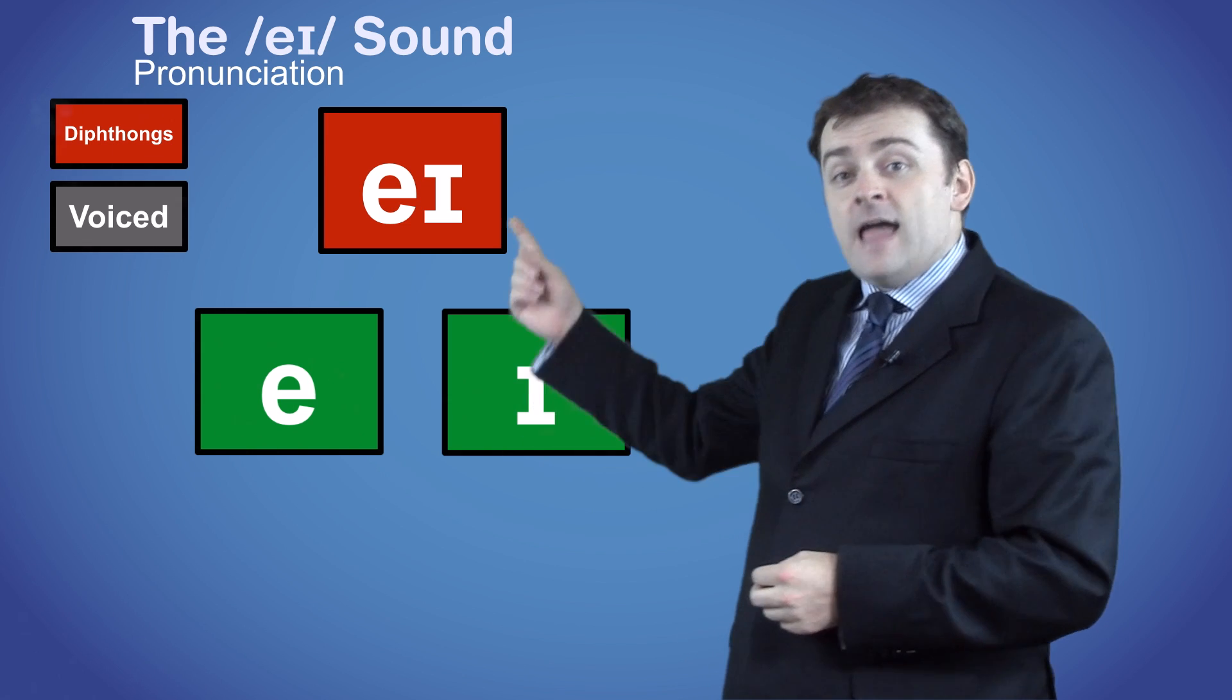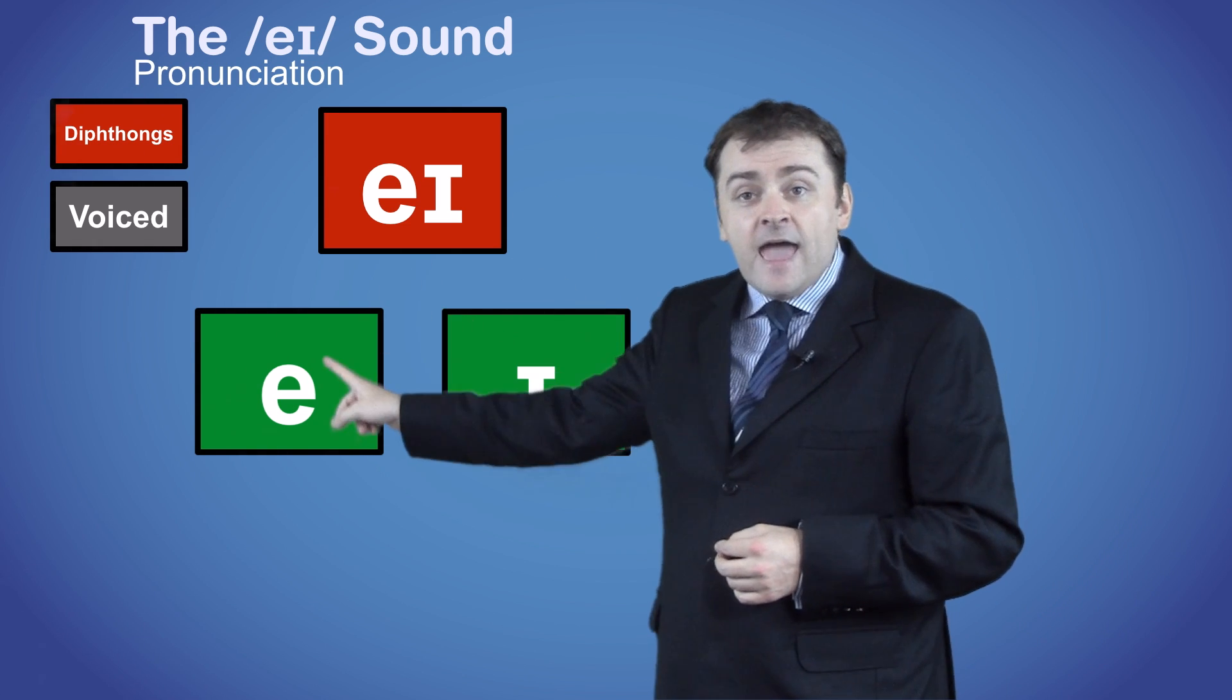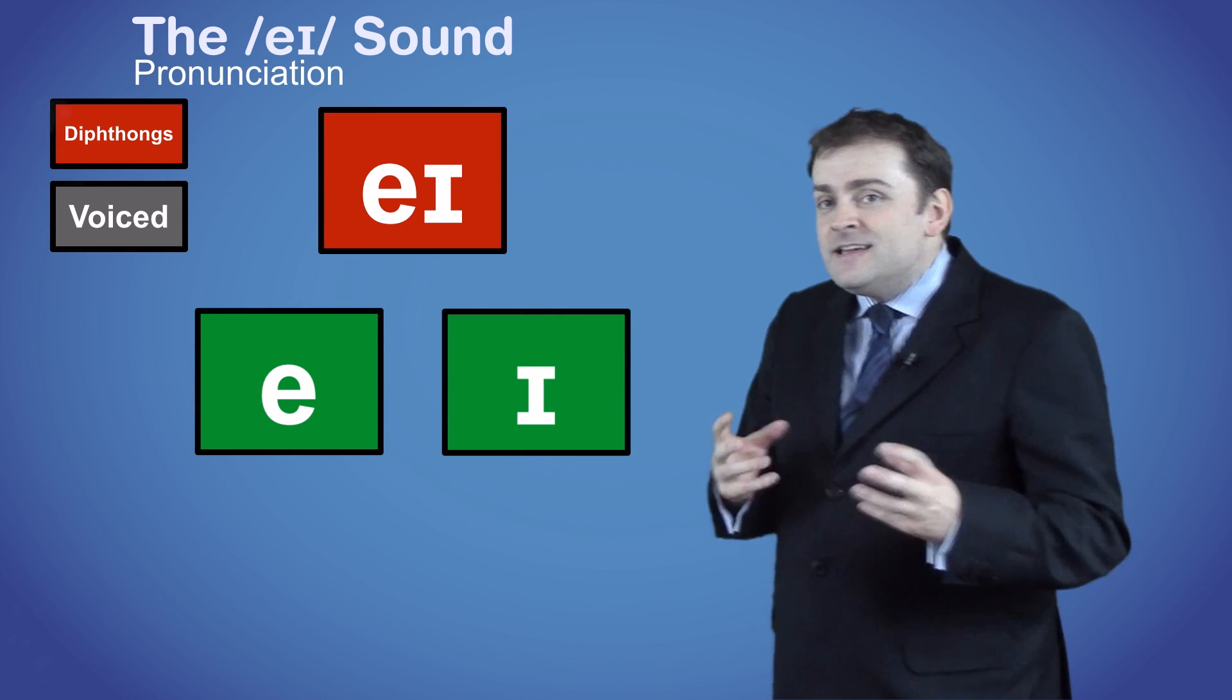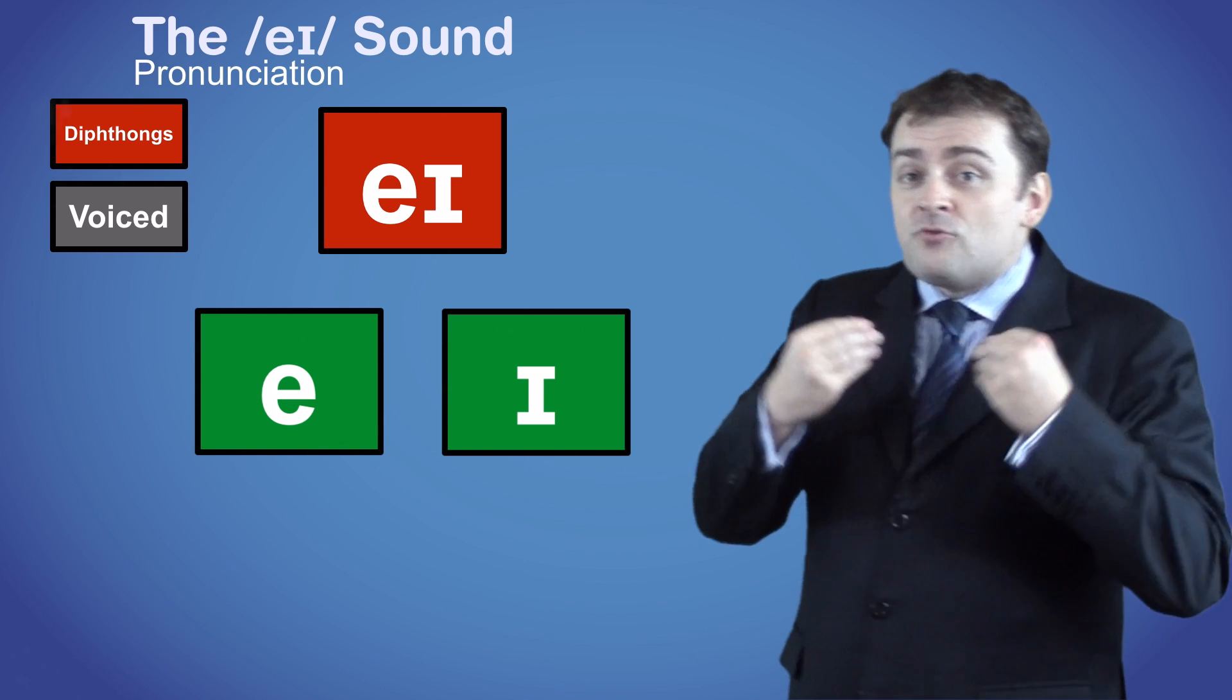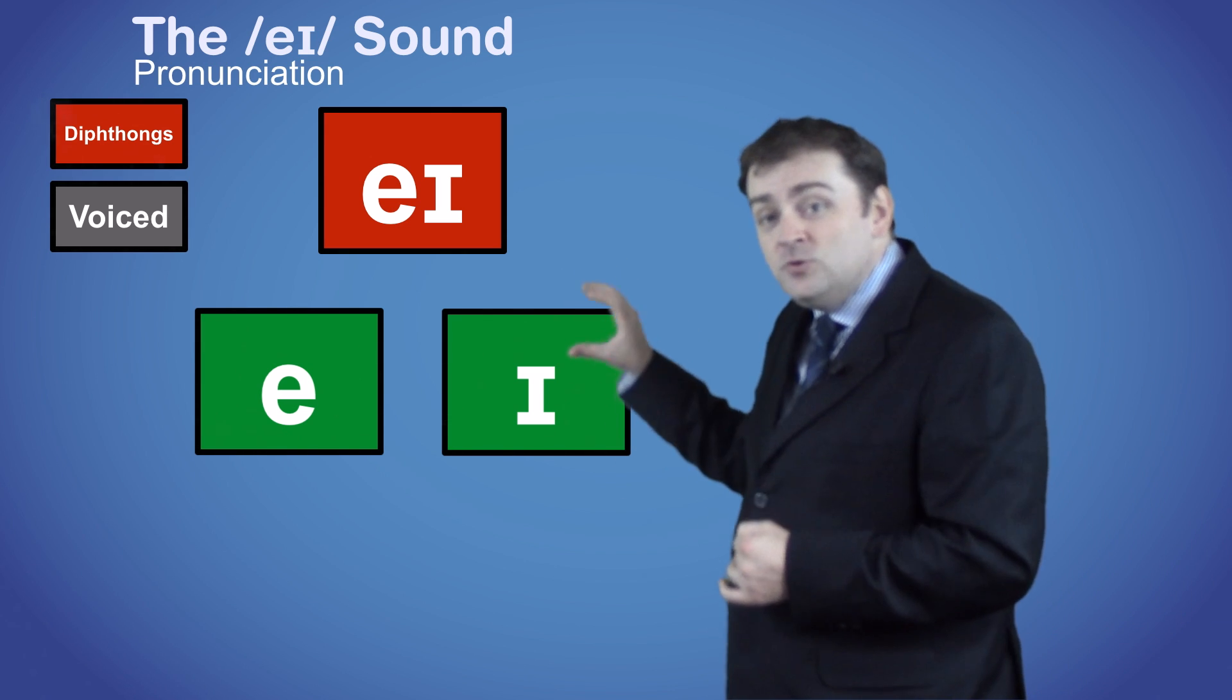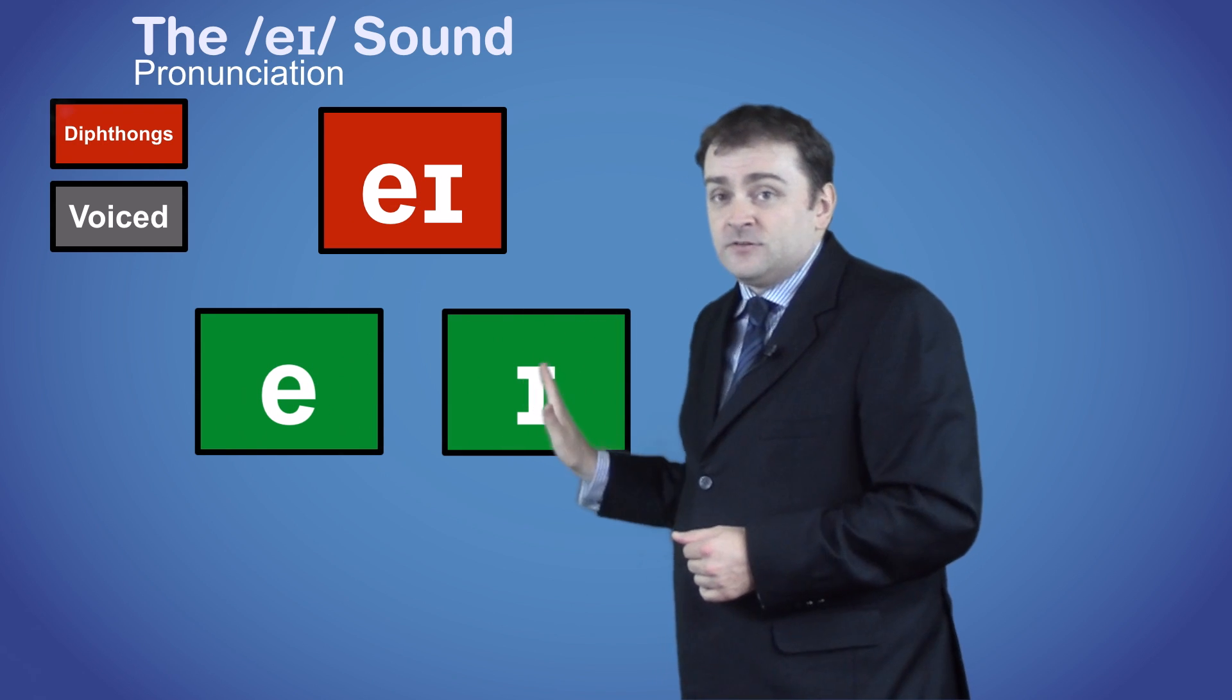So as you say EY, your mouth will start on the position of the EH and finish on the position of the IY sound. In this case, both sounds are what we call unrounded, so we keep our lips stretched out like we are smiling, but our mouth will close a little as we move to the IY sound.